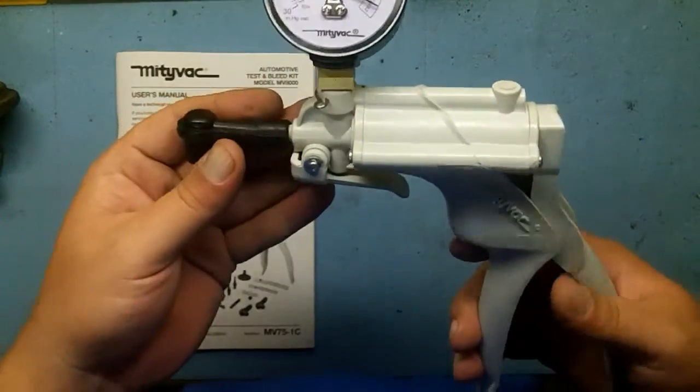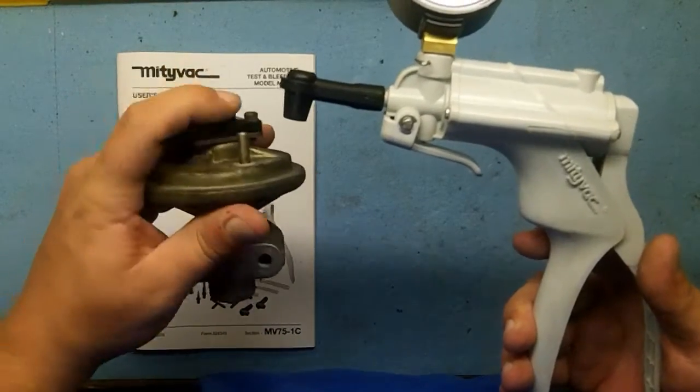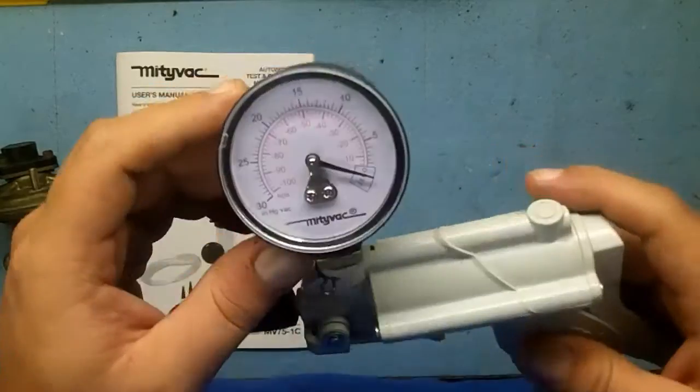If you want to apply vacuum to something, like an EGR valve to see if the diaphragm will stay open while vacuum is applied, you can do that with the hand pump and get a nice reading on the vacuum gauge.